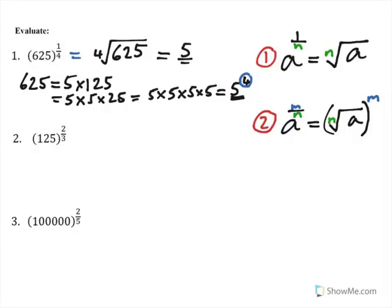The other thing I advise you to do is to learn that 25 times 25 — 25 squared in other words — is 625. It's quite useful also for the square root of 625, which is 25. Did you manage that one? I hope so.